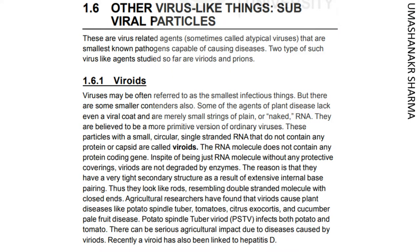Viruses may be referred to as the smallest infectious things, but there are some smaller contenders. Some agents of plant disease lack even a viral coat and are merely small strings of naked RNA. They are believed to be a more primitive version of ordinary viruses. These particles with a small, circular, single-stranded RNA that do not contain any protein or capsid are called viroids. The RNA molecule does not contain any protein-coding gene. Despite being just an RNA molecule without any protective coverings, viroids are not degraded by enzymes, because they have a very tight secondary structure due to extensive internal base pairing, thus resembling double-stranded molecules with closed ends.